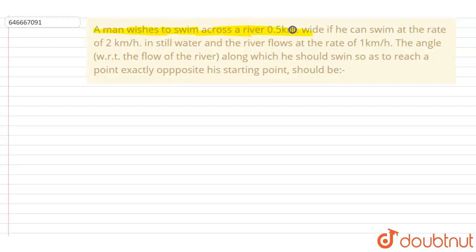swim across a river 0.5 kilometer wide. If he can swim at a rate of 2 kilometer per hour in still water and the river flows at a rate of 1 kilometer per hour, the angle along which the